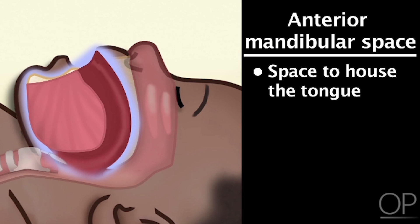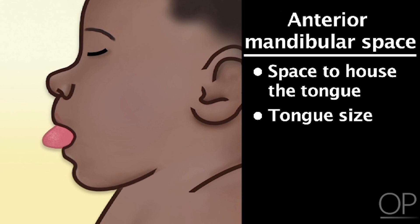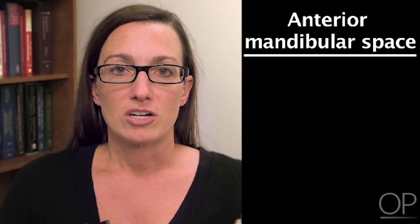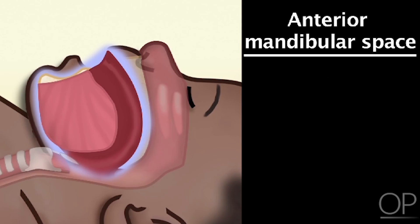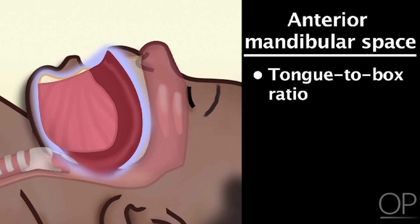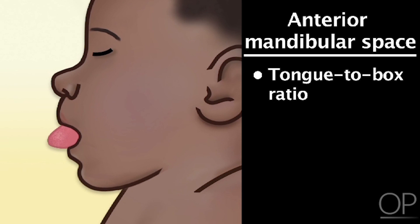Tongue size is also something you'll want to assess. Do they have an extremely large tongue? Is it protruding out of their mouth? Do they lack space inside their mouth to house that tongue? This is what I mean by tongue-to-box ratio. If you think of the tongue as a structure normally contained inside a box, does that box have any extra space beyond what the tongue occupies? Or is the tongue so large it fills the entire space and even protrudes out? Most patients are somewhere in between the two.